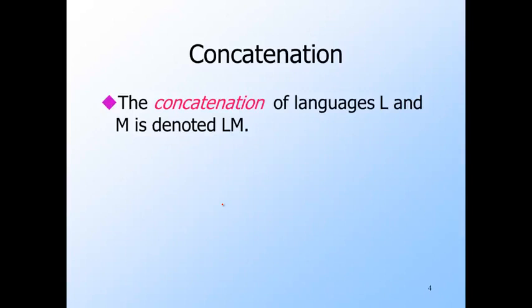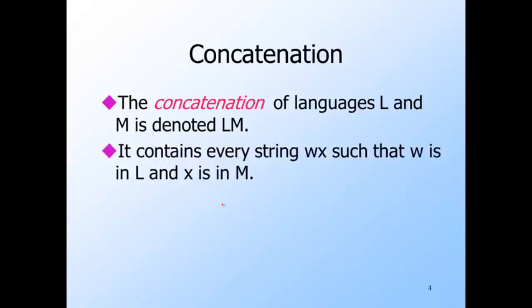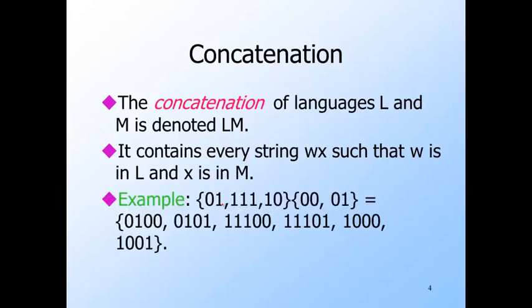Concatenation is also a fairly simple operation. We'll denote the concatenation of two languages L and M by writing LM with no symbol between them. The language LM contains every string W concatenated with X, such that W is in L and X is in M. For example, we're multiplying the two languages: taking '01' from the first language and concatenating it with '00' gives '0100'; concatenating '01' with '01' gives '0101'. Then '111' concatenated with the two strings gives two more strings in the result.